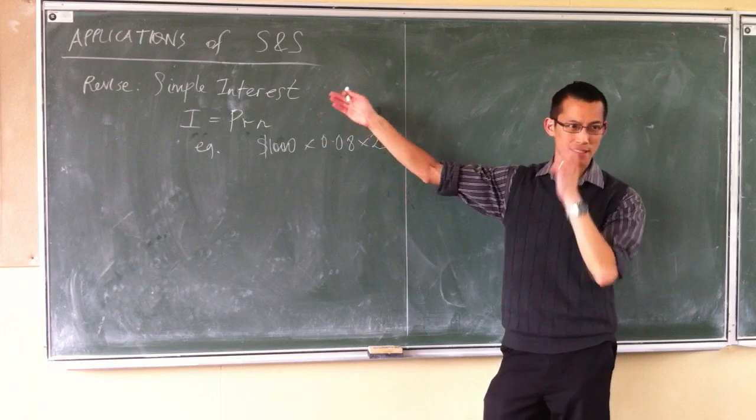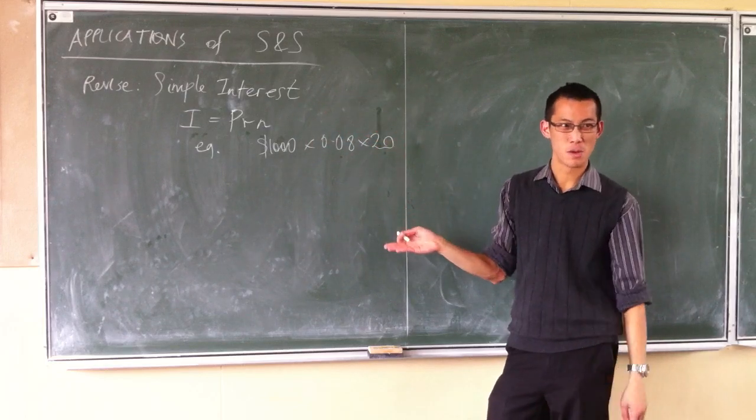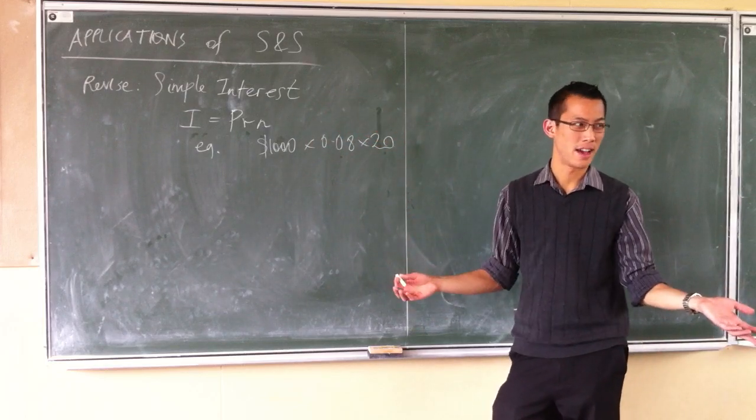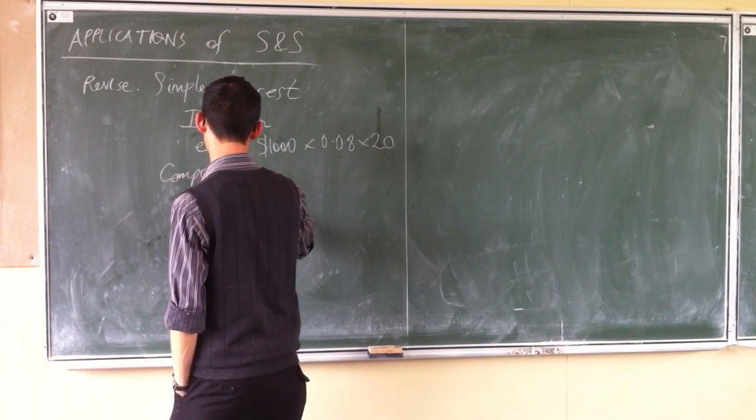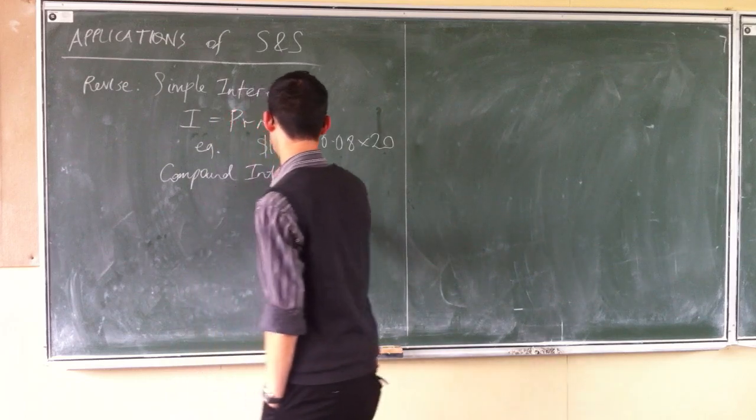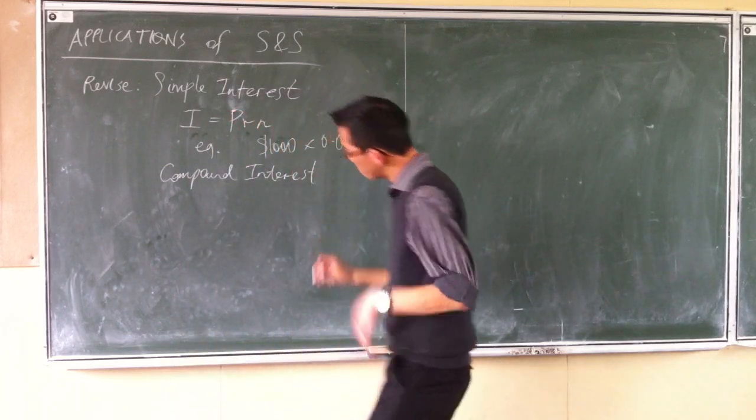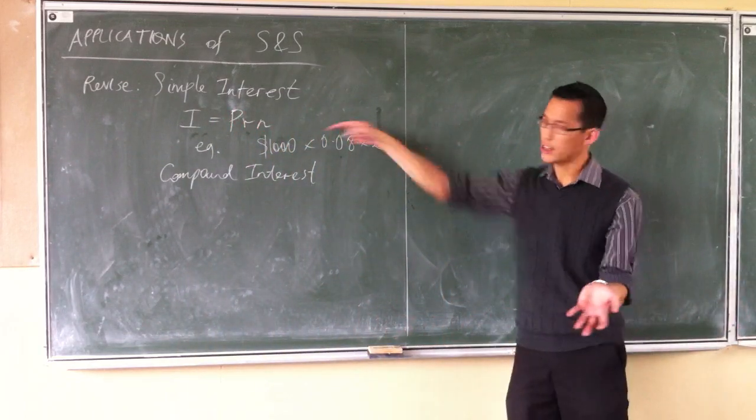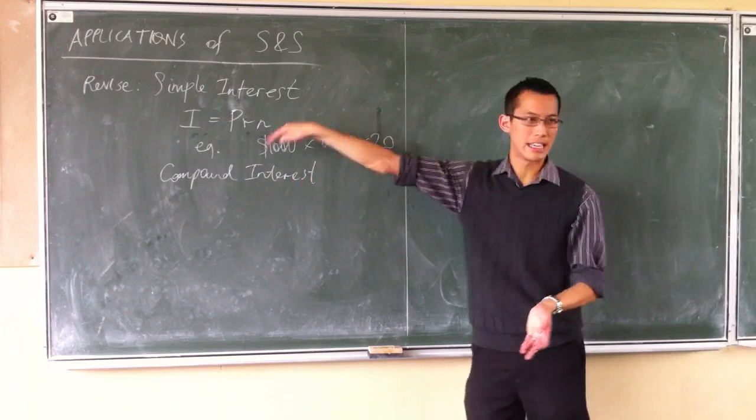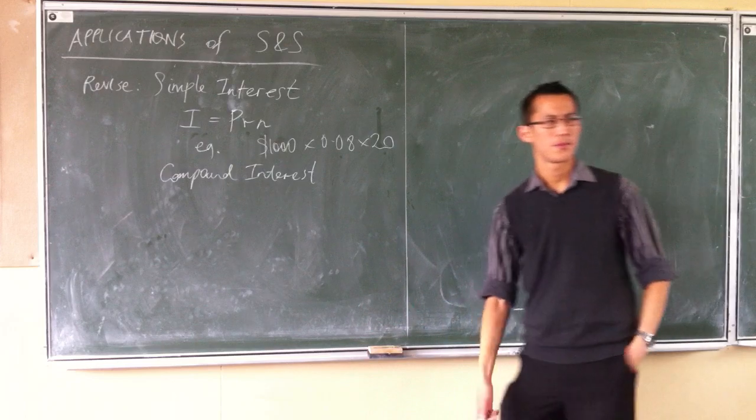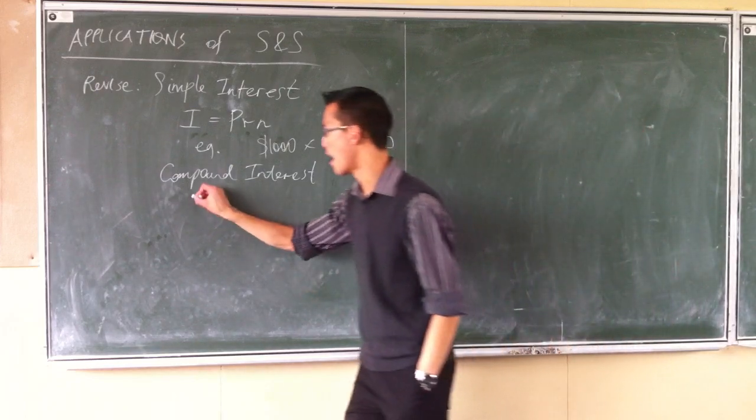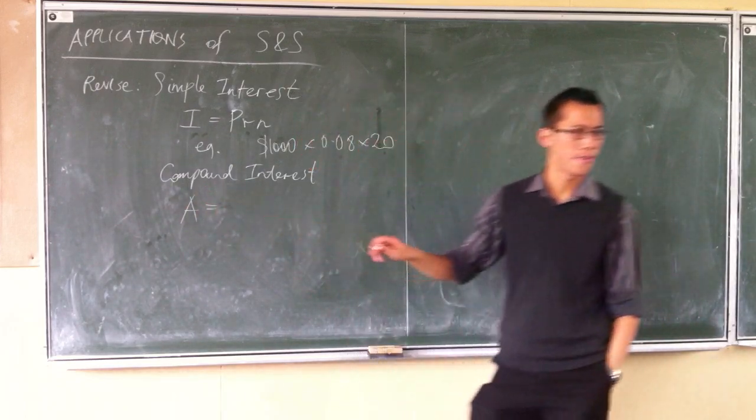Now of course, that's not how interest really works in the real world. What's the name of the normal interest that we have? Compound interest. The idea being, as you add interest on, you get interest on the interest as well. That's why it's compounded. What was the formula for compound interest? It didn't start with an I, it started with an A - a final amount.